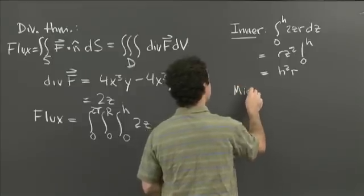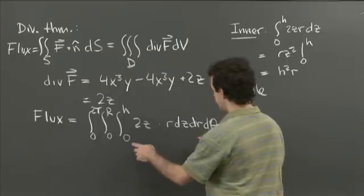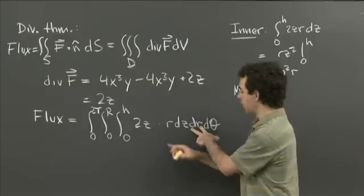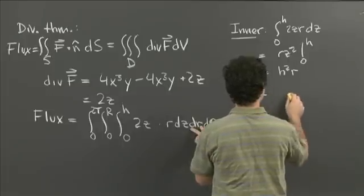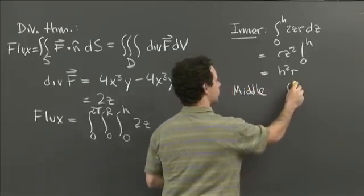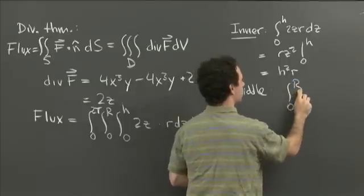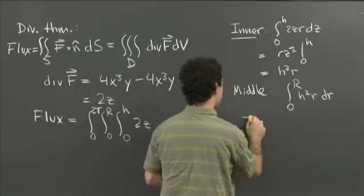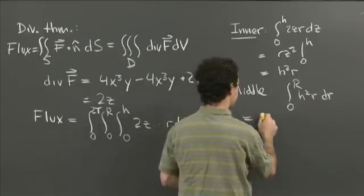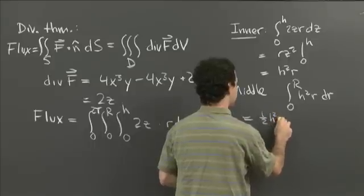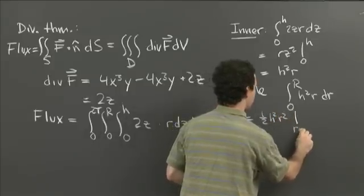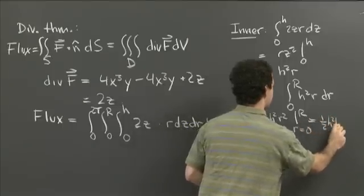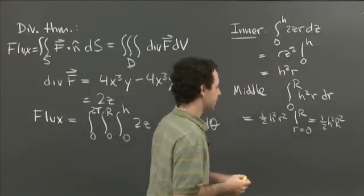The middle integral is the integral from 0 to big R of h squared little r, dr. Since h is constant, that equals one half h squared r squared evaluated from 0 to R, giving one half h squared R squared.